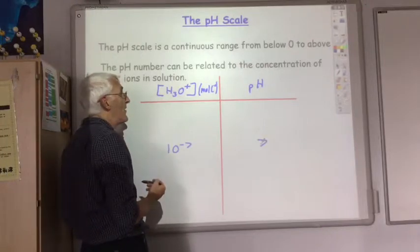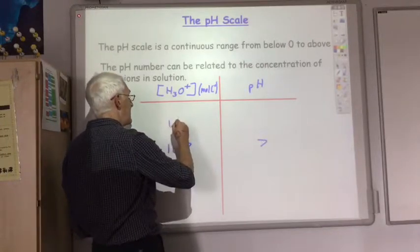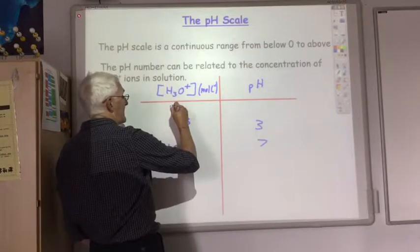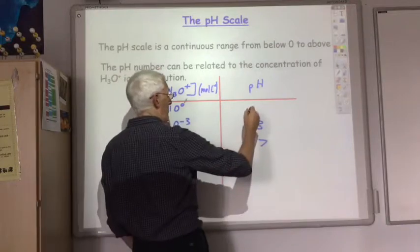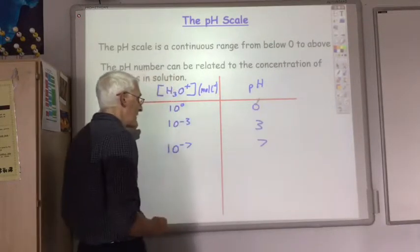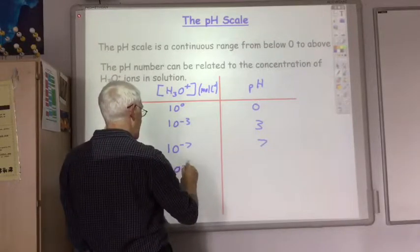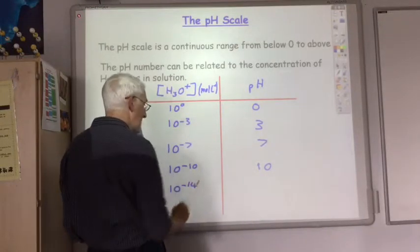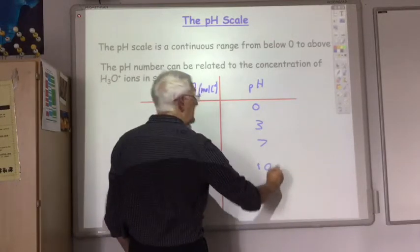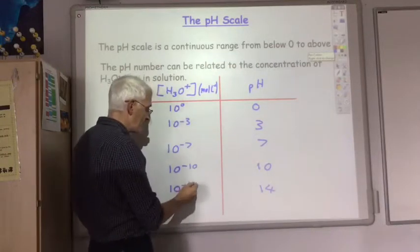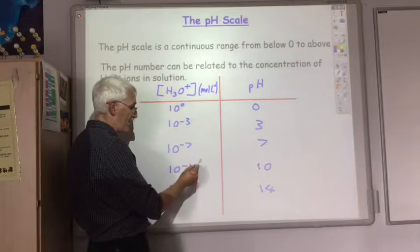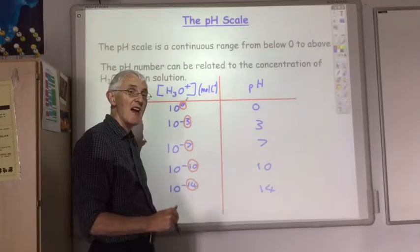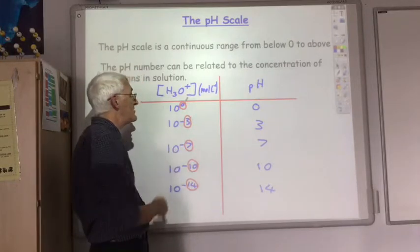If we have a more concentrated solution of hydrogen ions at 10 to the minus 3, the pH is 3. If the concentration is 10 to the power of 0, which is 1, it will have a pH of 0. A hydrogen ion concentration of 10 to the minus 10 gives a pH of 10, and 10 to the minus 14 gives a pH of 14. So the pH number actually refers to the negative power of the base 10, giving you a direct measure of the hydrogen ion concentration.